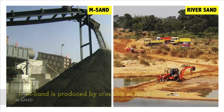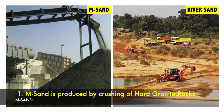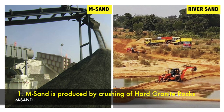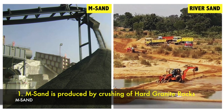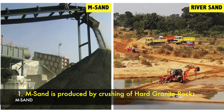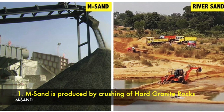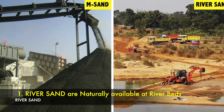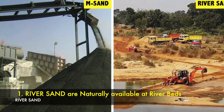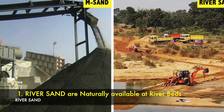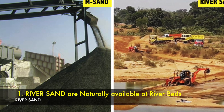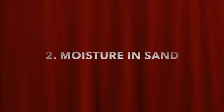Point 1 — M sand: M sand is produced by crushing hard granite rocks, which are easily available at nearby places. River sand: River sand is naturally available at riverbeds.